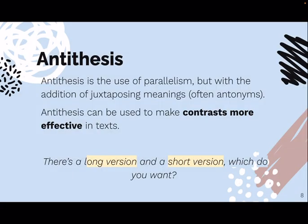Antithesis is the use of parallelism but with the addition of juxtaposing — often opposite — meaning, typically through antonyms. Antithesis can be used to make contrasts more effective and really draw the audience's attention to the contrast. For example, using the parallel structure of adjective-noun adjective-noun but pairing 'long' and 'short,' which are antonyms — that juxtaposition of meaning is what makes it antithesis.